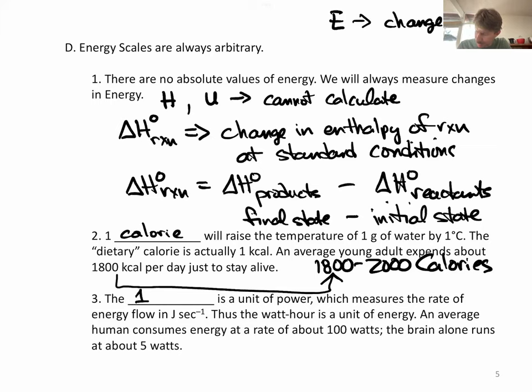The watt is a unit of power, which measures the rate of energy flow in joules per second. Thus, the watt-hour is a unit of energy. In your electricity bills, you've seen the kilowatt hour. When you multiply kilowatts times hours, you're really being billed for the amount of joules that you use.